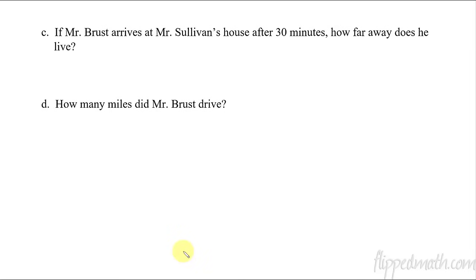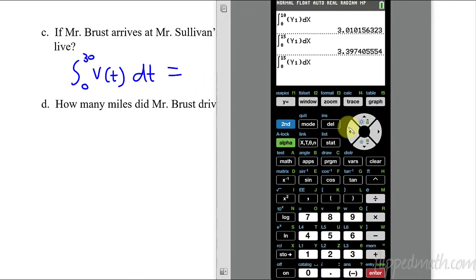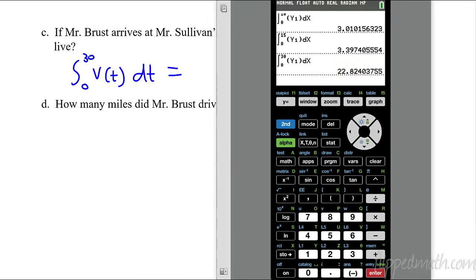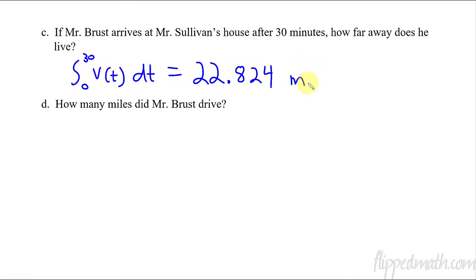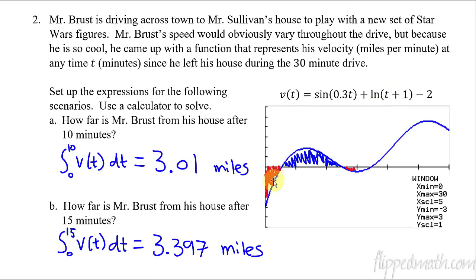If Mr. Brust arrives at Mr. Sullivan's house after 30 minutes, how far away does he live? That is going from 0 to 30 of V of t — those 30 minutes, we integrate the velocity, and it tells us how far he is from the starting position. I'm going to do 2nd Enter to pull up the last thing I did and just change the 15 to a 30. The answer is 22.824. So just a little under 23 miles is how far apart they live. Mr. Brust got lost — all the negative red stuff represents that he was driving the wrong way.